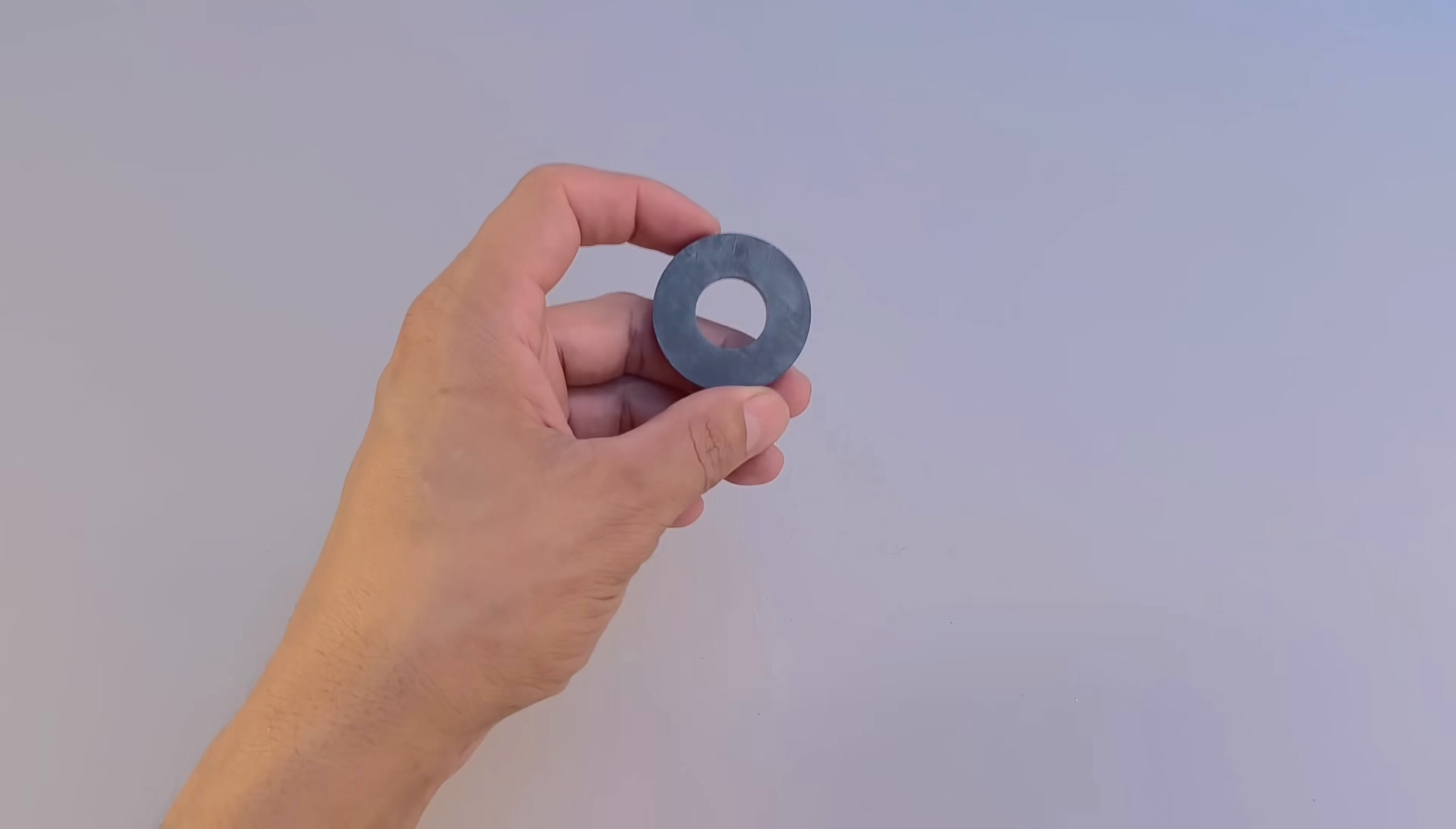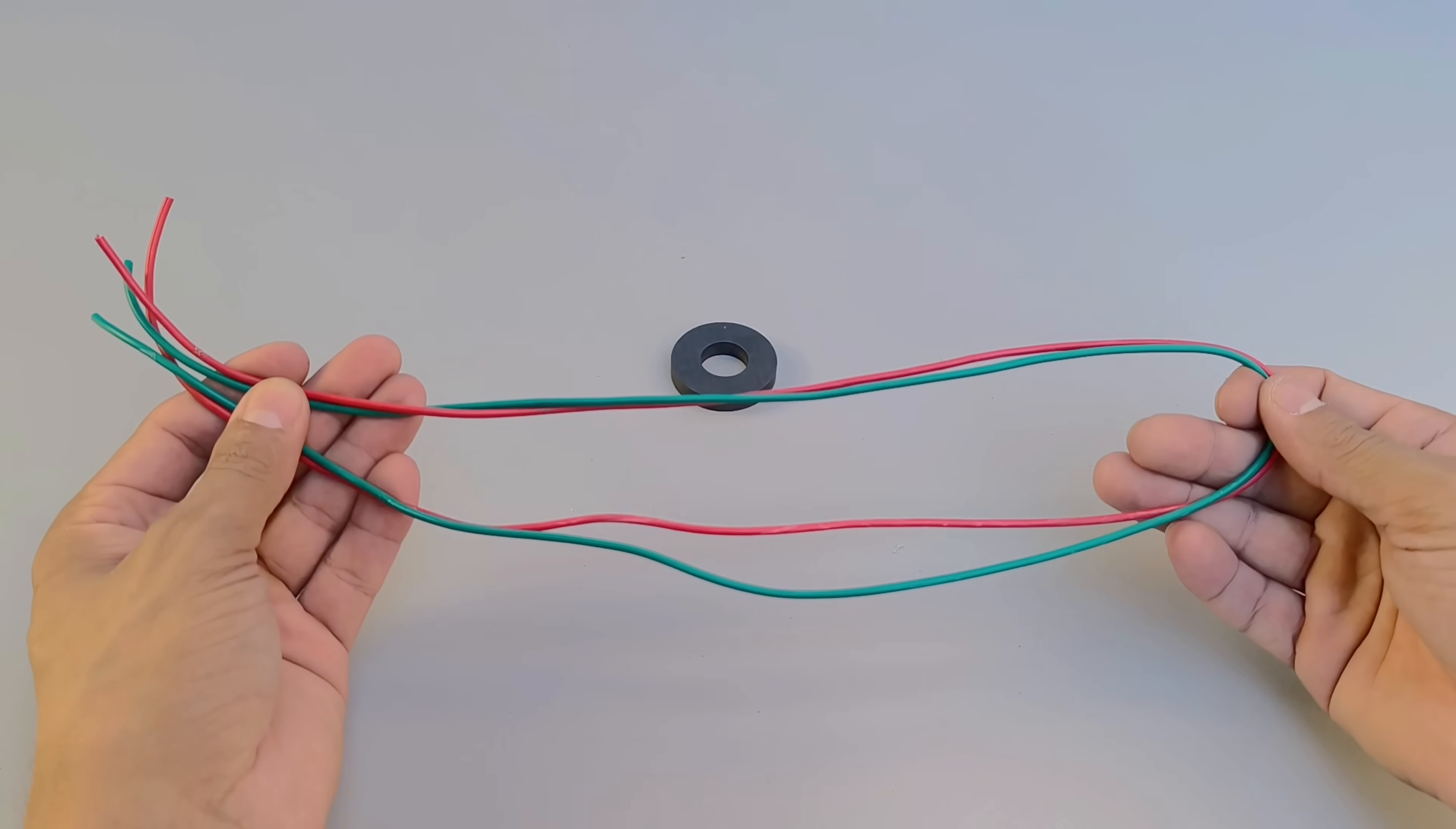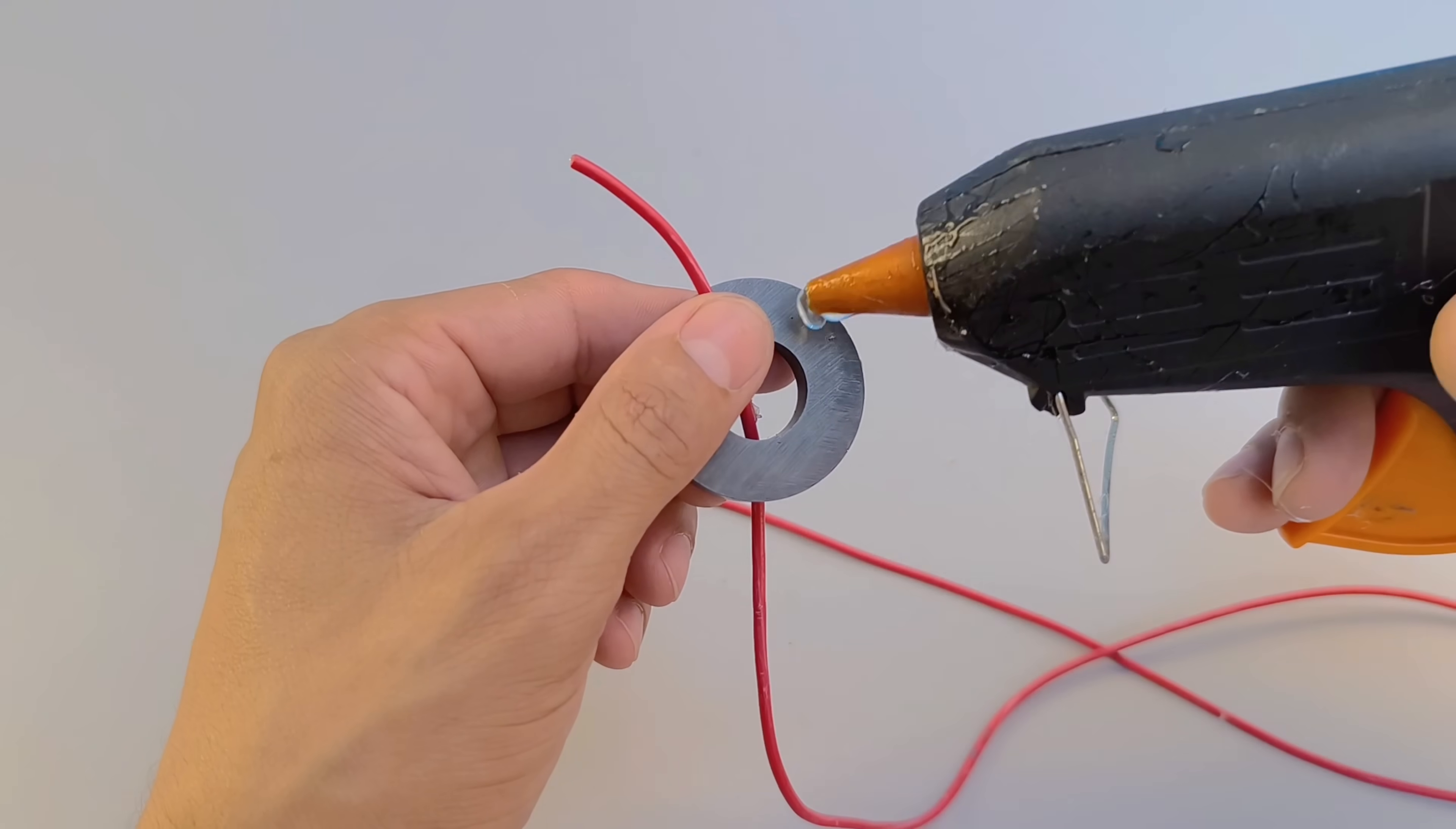The secret to this experiment is to use a magnet measuring approximately 40 by 18 by 7 millimeters. In addition to the magnet, separate two pieces of flexible copper wire, each about 1 millimeter thick and approximately 50 centimeters long. The goal is to create a simple electromagnet using only these two materials.